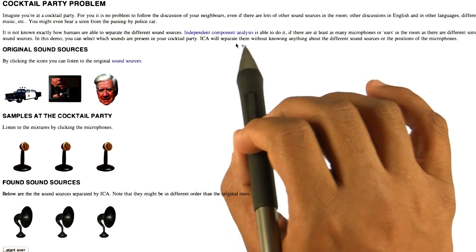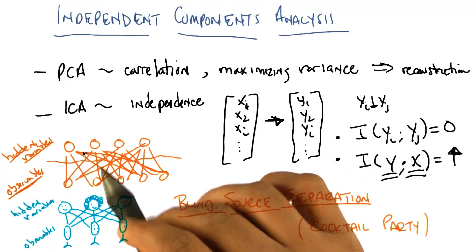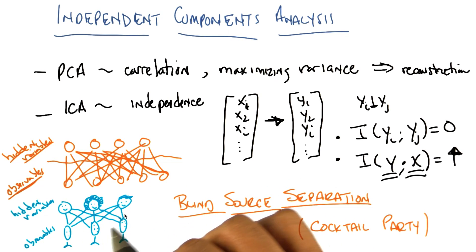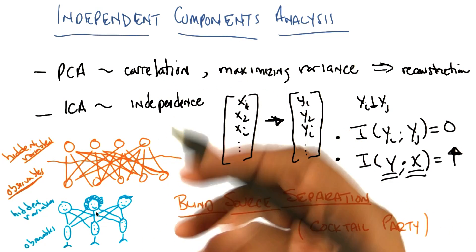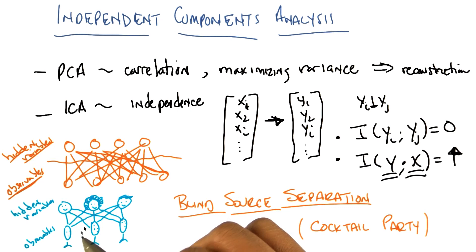And the reason it works with independent components analysis and that fundamental assumption that it's making is that whatever's generating, in these cases these sounds, the sources, are statistically independent of one another, which happens to be true in that case. And they're combined together in a way that is a linear combination.